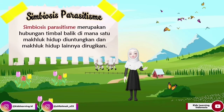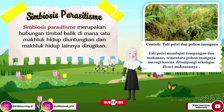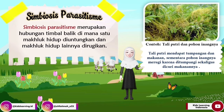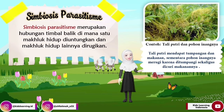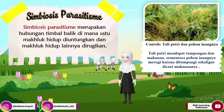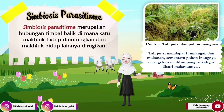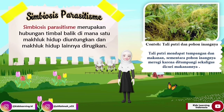Untuk contoh simbiosis parasitisme ini, yaitu ada tali putri dan pohon inangnya. Tali putri ini mendapat tumpangan dan makanan dari pohon inangnya, sementara pohon inangnya merugi karena ditumpangi sekaligus dicuri makanannya, sehingga dapat menyebabkan pohon inangnya mati.